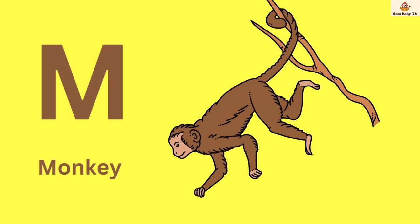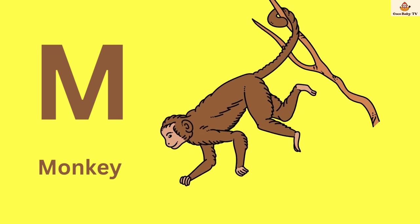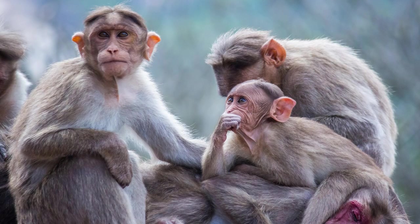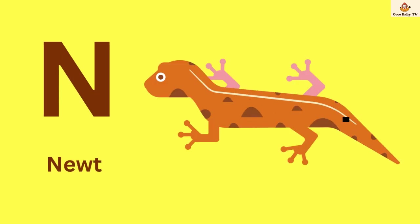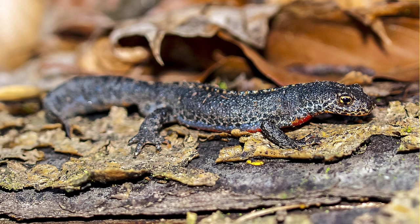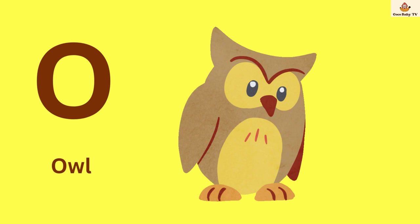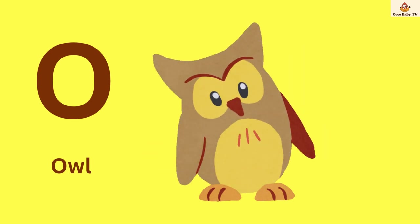M. M is for monkey. N. N is for newt. O. O is for owl.